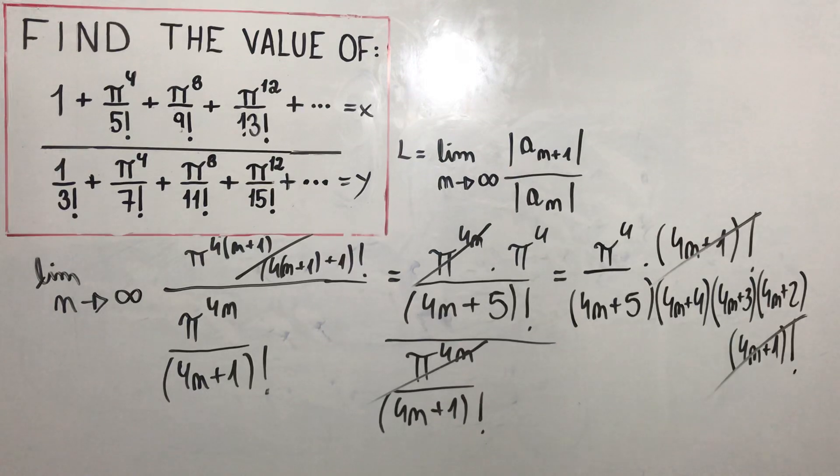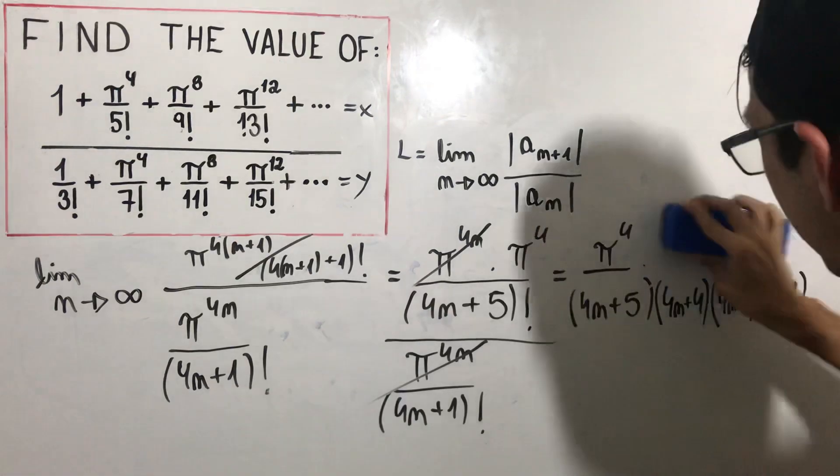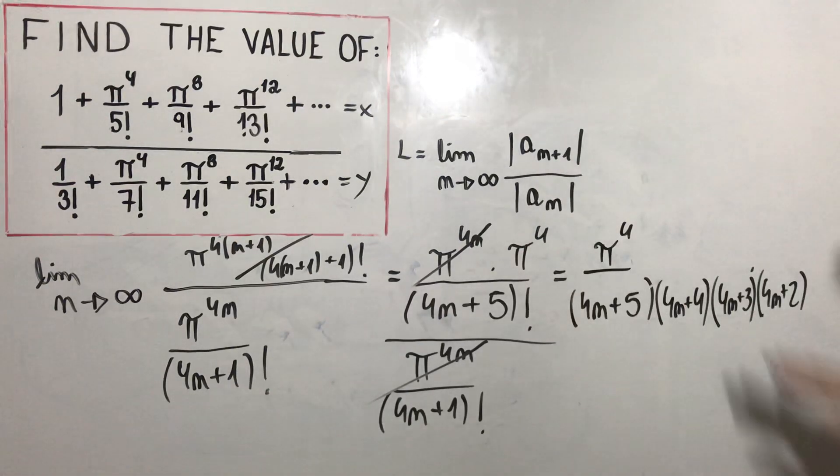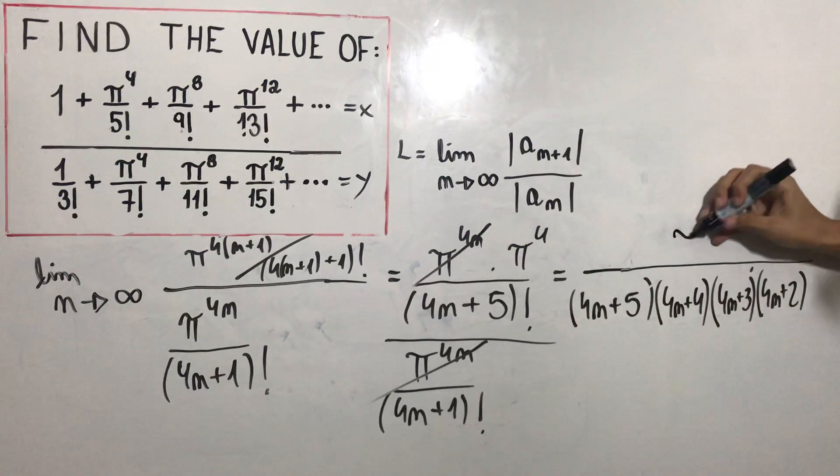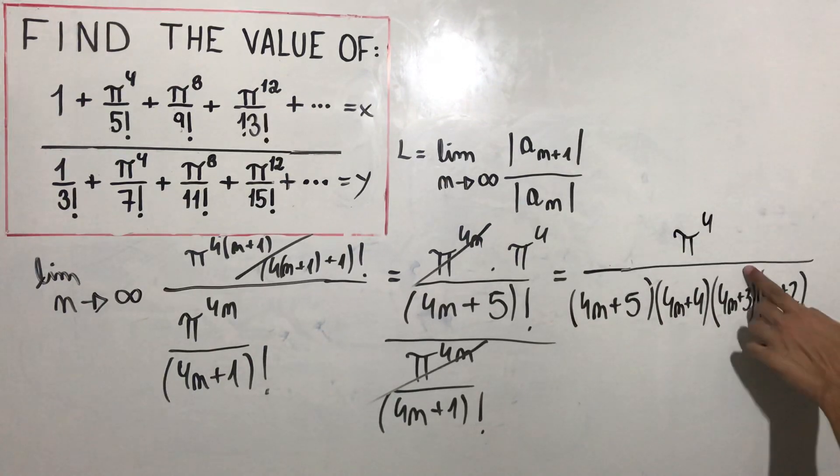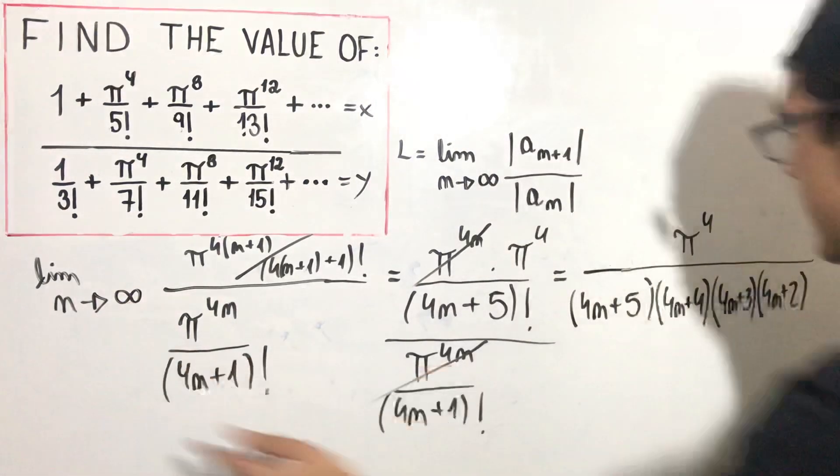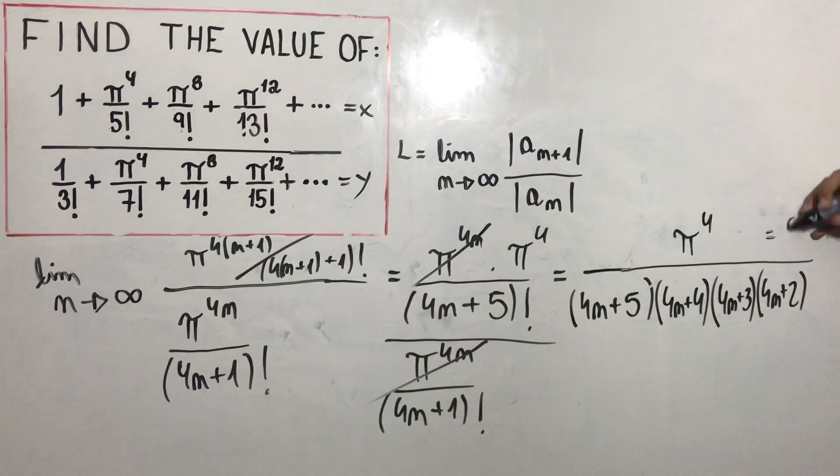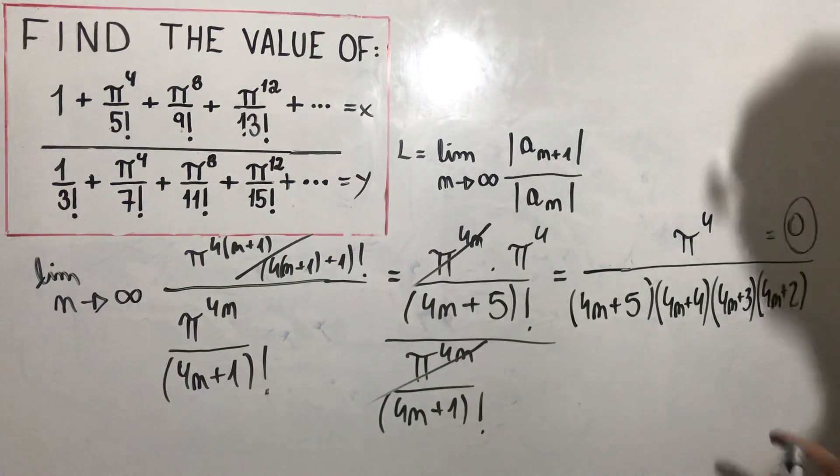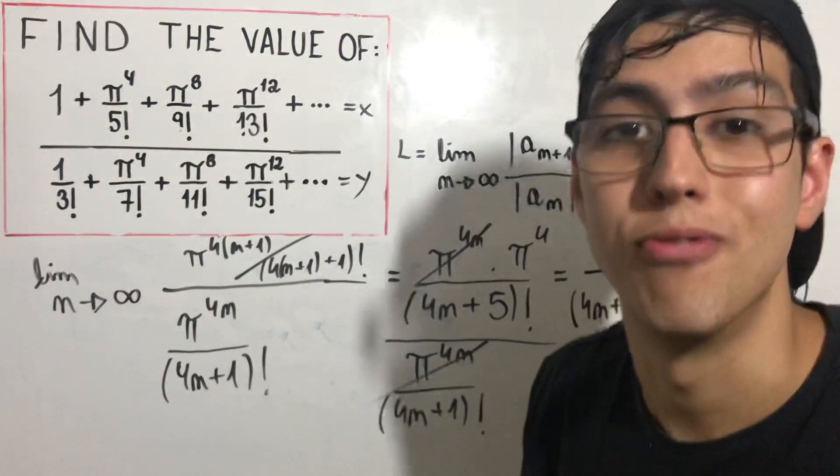Oh my gosh! You're right, Shandy! You're right! I know! I'm a bit crazy, I'm sorry. So it's gonna be π^4 over those terms. But we know that n goes to infinity, so the limit will be 0. And we know that 0 is smaller than 1, so this series converges.